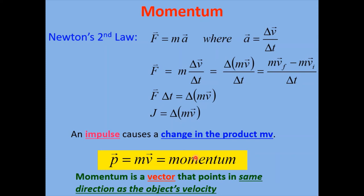Momentum is a new quantity for us, and it is a vector. It is given the letter p — we already use m for mass, so momentum is called p. Momentum is defined as p = mv, where the arrow above p reminds us it's a vector pointing in the same direction as the object's velocity.